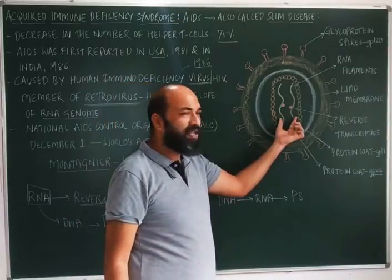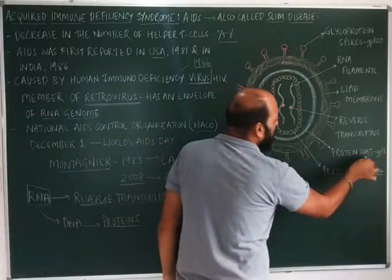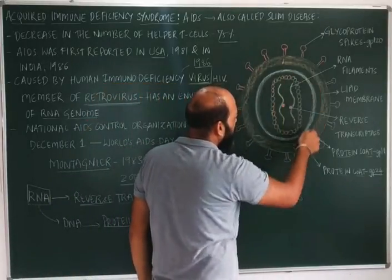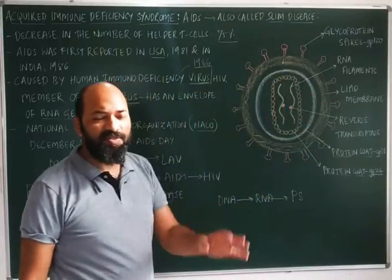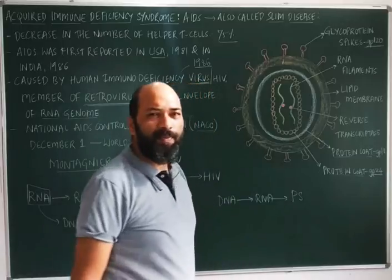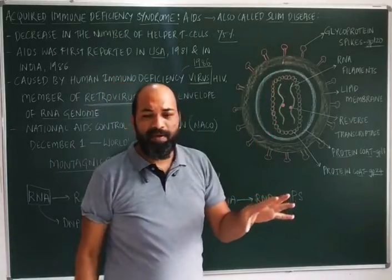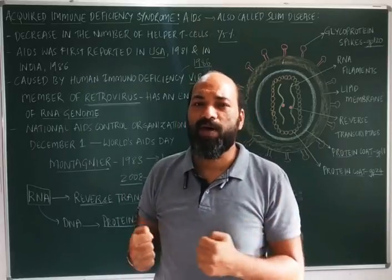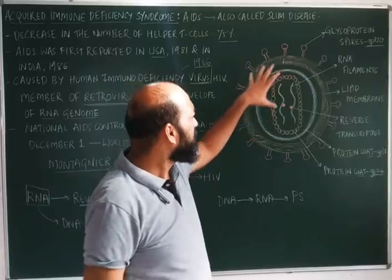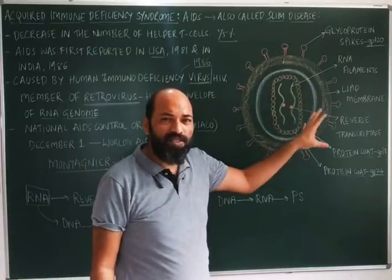Above the GP24 protein coat surrounding the RNA is another glycoprotein layer called GP18. Above that is a lipid bilayer membrane made up of glycoprotein 120, which also consists of spikes. This lipid bilayer membrane and spikes are derived from the normal macrophage cells that the virus attacks.